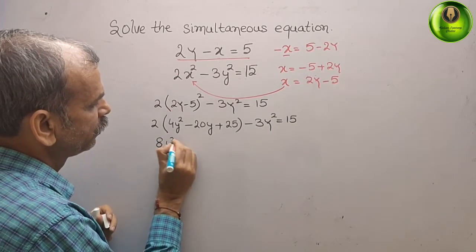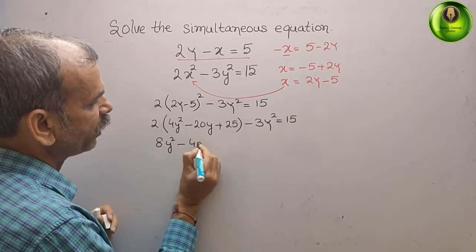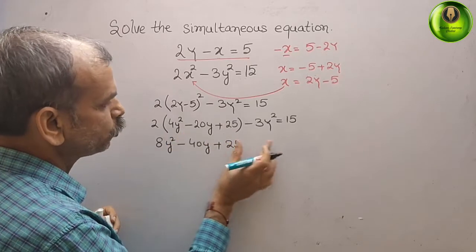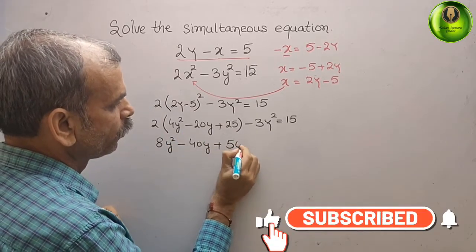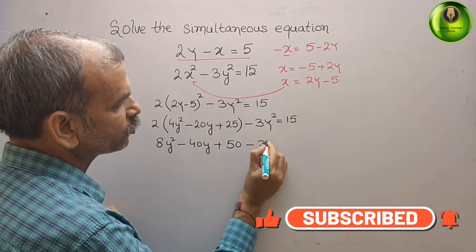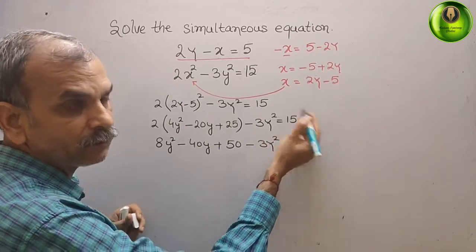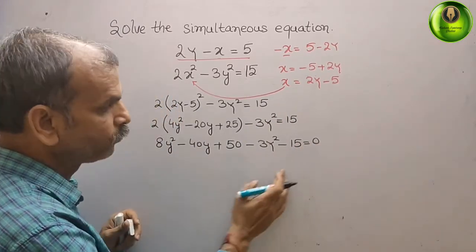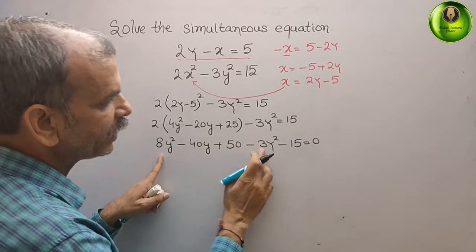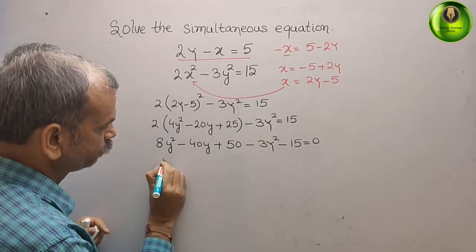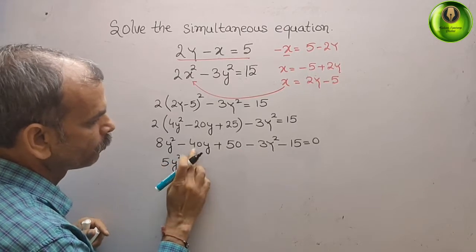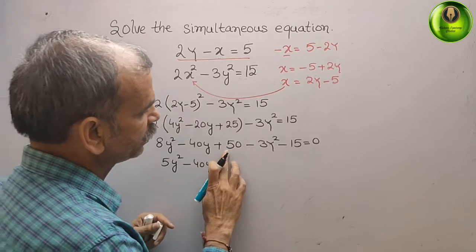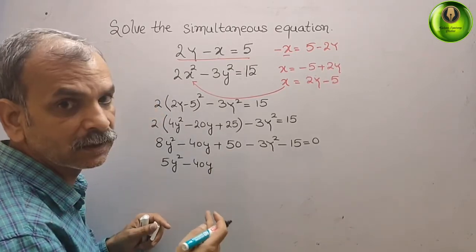Opening the bracket and multiplying by 2 gives 8y squared minus 40y plus 50 minus 3y squared, then bringing 15 to the left side gives minus 15, equaling 0. Combining like terms: 8y squared minus 3y squared is 5y squared, minus 40y, and 50 minus 15 is plus 35, equals 0.